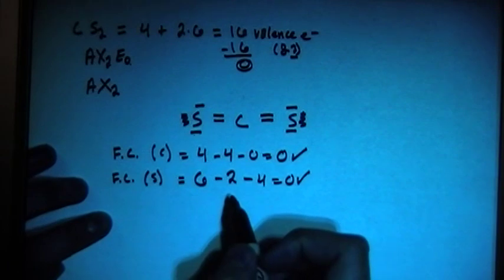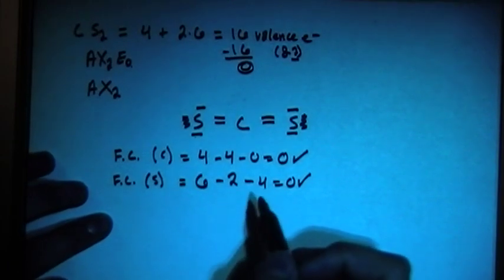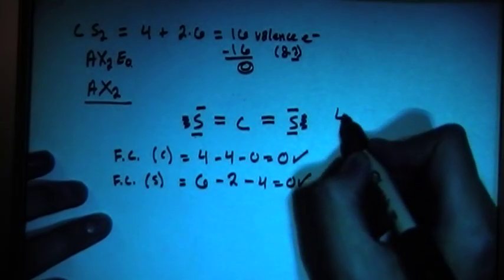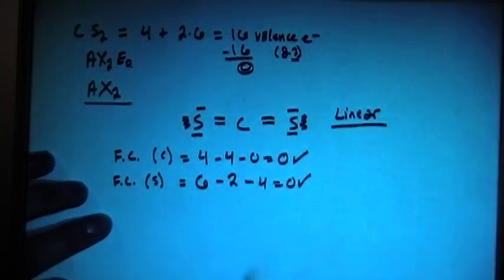So now let's go ahead and look at the shape. Since it's AX2, that is going to be a linear shape.